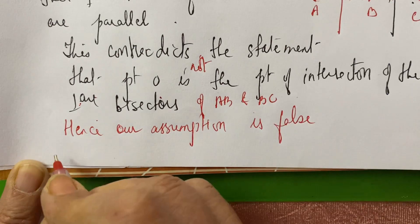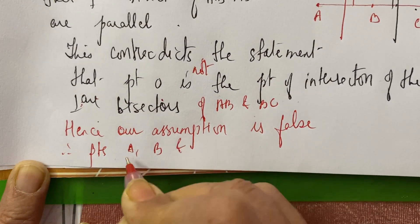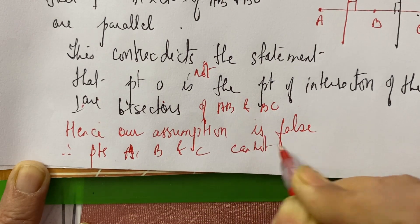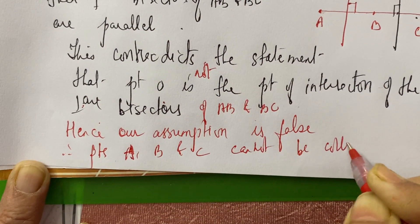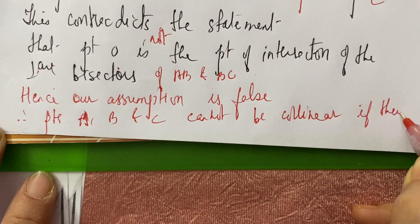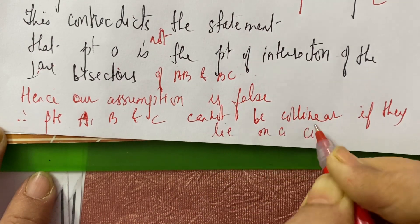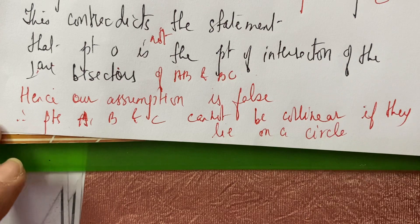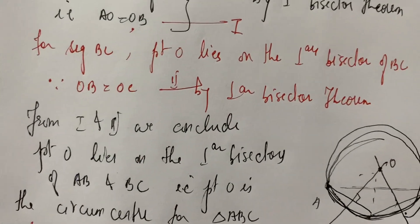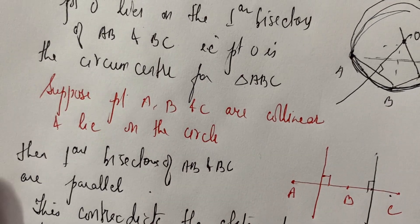Therefore, points A, B and C cannot be collinear — they cannot be collinear if they lie on a circle. I hope you understood the proof. If you still have doubts, kindly put your doubts in the comment section.